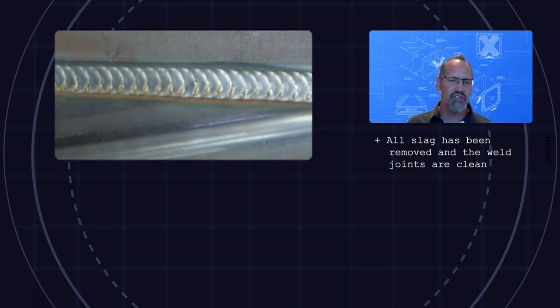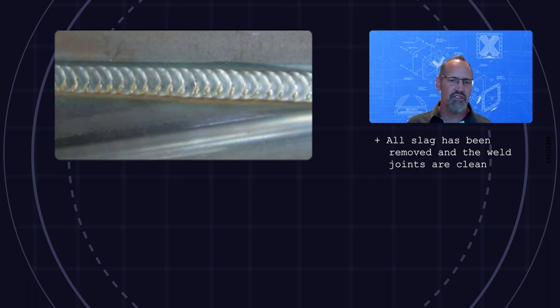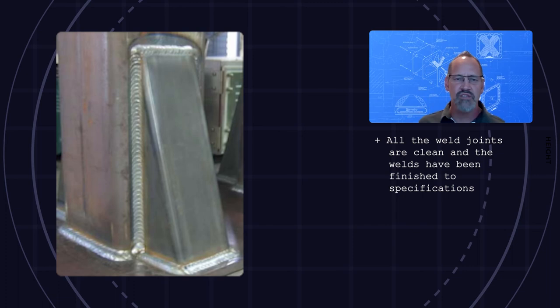This is a great example of Xometry's weld joint standard. Similar to image one, image two demonstrates a well done job. All weld joints have been cleaned and are finished to drawing specifications.